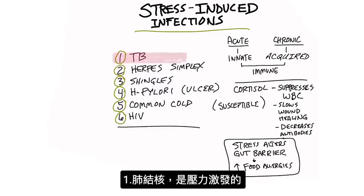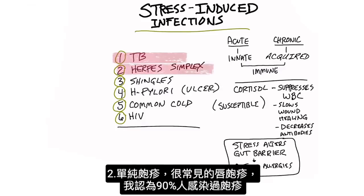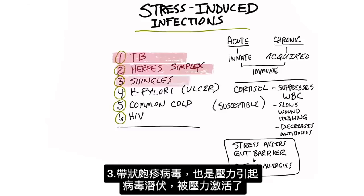We have TB, which is triggered by stress. Herpes simplex, like a cold sore, is very common. In fact, if I'm not mistaken, 90% of the population has that virus. Shingles comes out during stress and is caused by a virus.